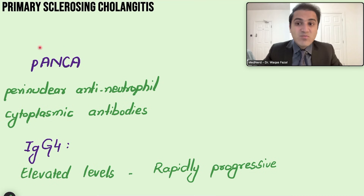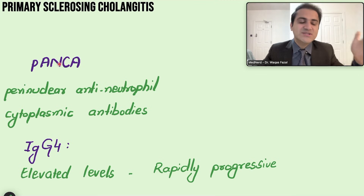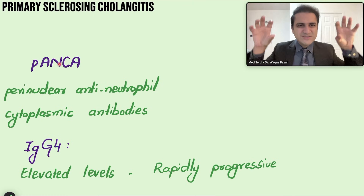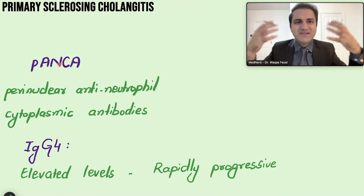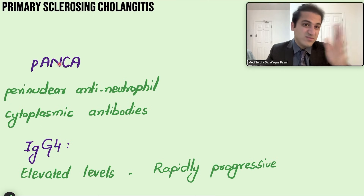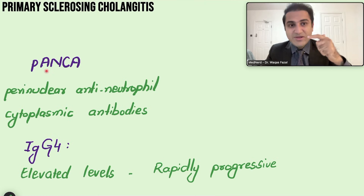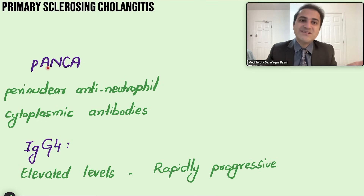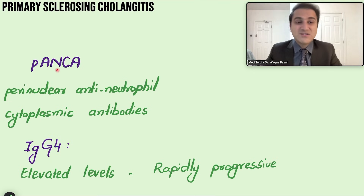pANCA antibodies are positive in 80% of PSC cases. They are not used for definitive diagnosis but serve as supportive evidence. PSC diagnosis involves collecting multiple pieces of supporting evidence and excluding all other causes. Unlike primary biliary cirrhosis — where anti-mitochondrial antibodies are diagnostic — pANCA in PSC is supportive but not specific.